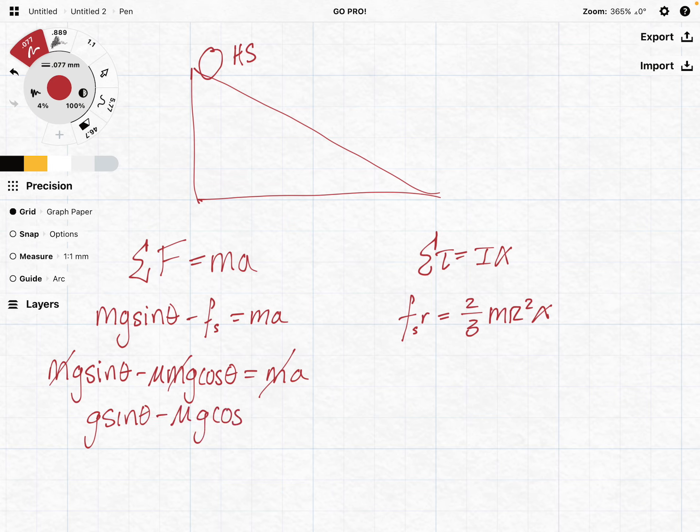I'm going to do the same thing over here and start to eliminate these r's. We know it's still going to be mu mg cosine theta times r equals two thirds m r squared. Let's expand this so we can do this in one step. We've got two r's we can eliminate, one on the left side and one on my denominator. I can rewrite this as mu mg cosine theta equals two thirds ma.